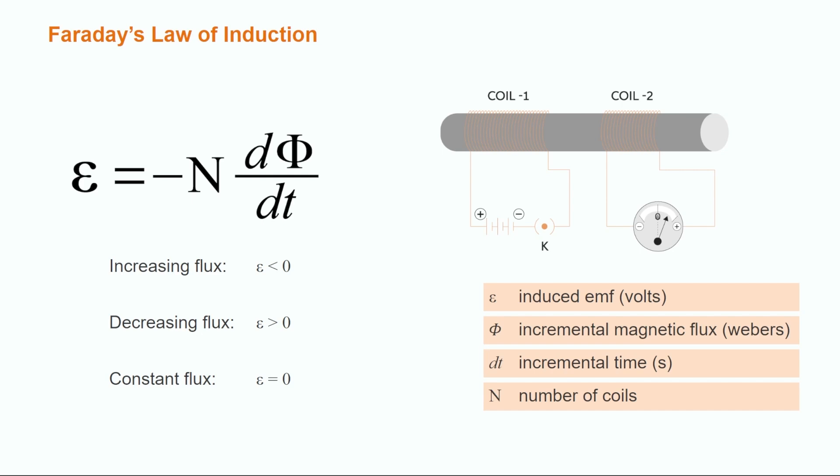This is known as Faraday's law of induction. When the flux is increasing, the EMF will be negative, and when the flux is decreasing, the EMF will be positive. This also means that when the flux is constant, there is no induced EMF.